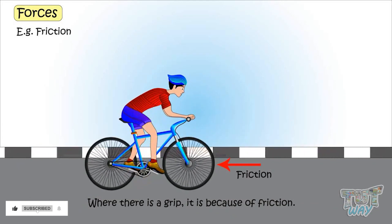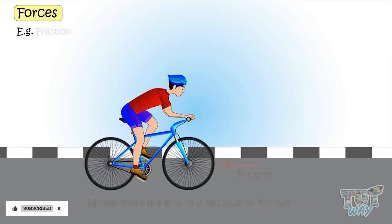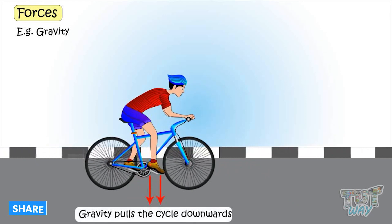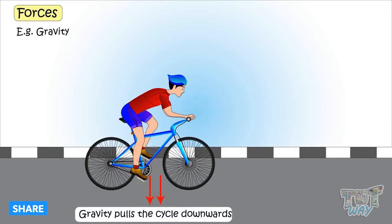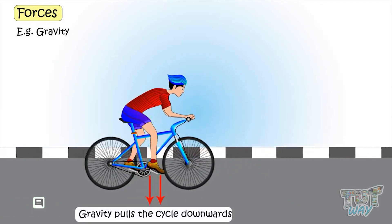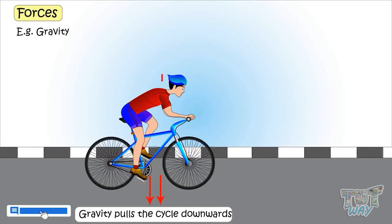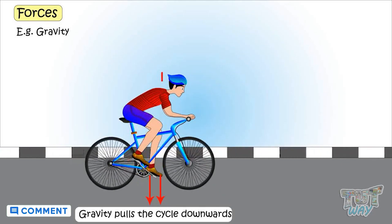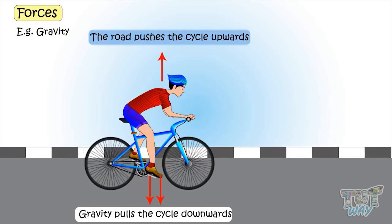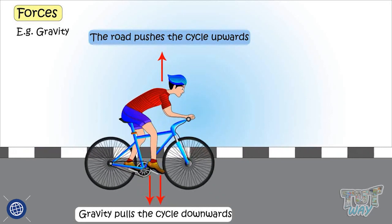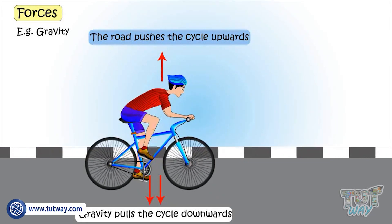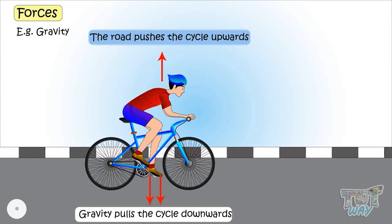The next force acting here is gravity. The force of gravity pulls the cycle downwards. There is also a force acting from the ground, which is pushing it upwards. So there are different forces acting while we are riding a bicycle.